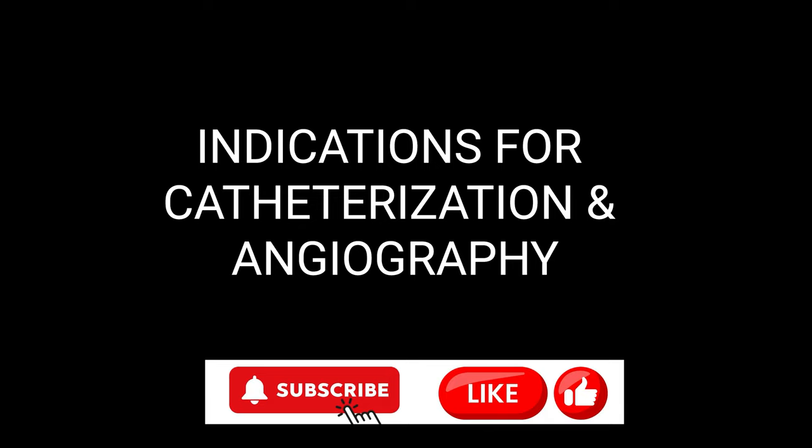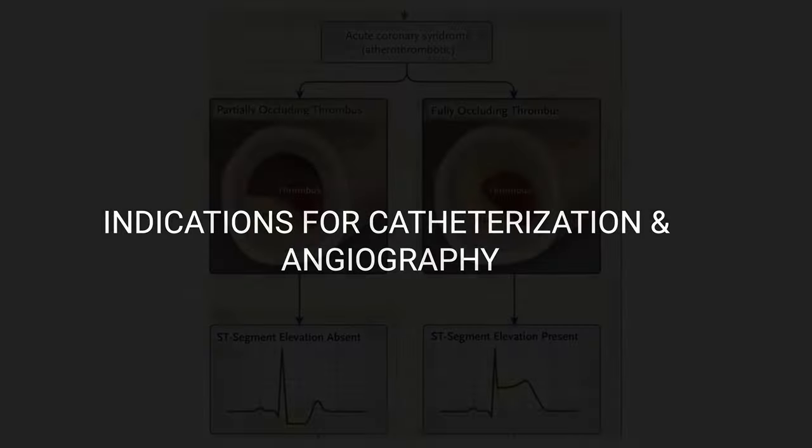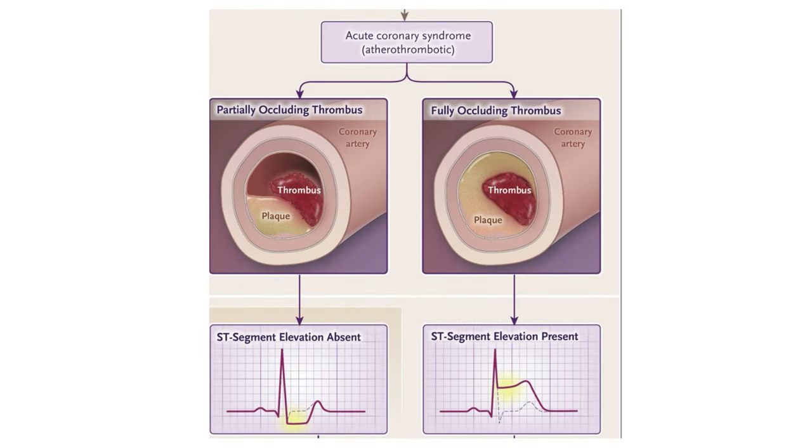Now we have taken all the necessary measures in the emergency department and patients are ready for admission. The important question is who should go to the cath lab. The dominant cause of ACS is the rupture or erosion of an atherosclerotic plaque with thrombus formation. An invasive angiography followed by revascularization will tackle that root cause by dissolving the thrombus and opening the narrowed lumen.